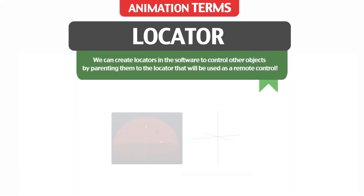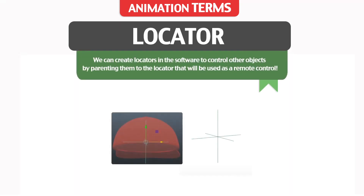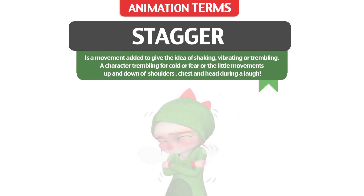Locator: we can create locators in the software to control other objects by parenting them to the locator, which is used as a remote control. Stagger: a movement added to give the idea of shaking, vibrating or trembling — such as a character trembling from cold or fear, or the little movements up and down of the shoulders, chest and head during a laugh.